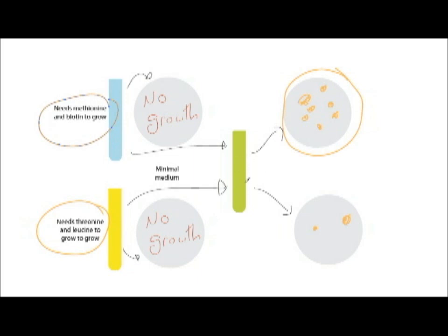When they conjugate and swap DNA, they gain the ability to produce the things they need to grow, which is why in the medium with none of the supplements, there are a couple of colonies.